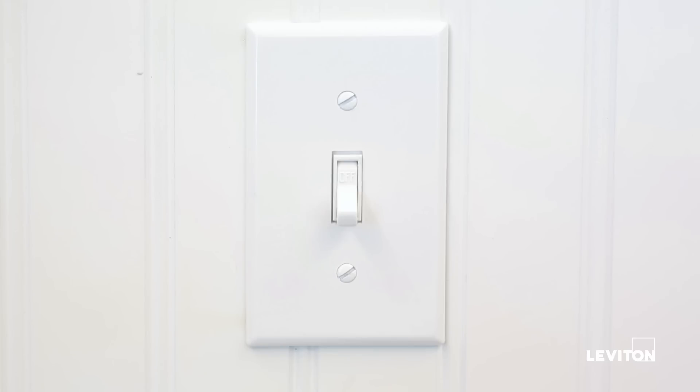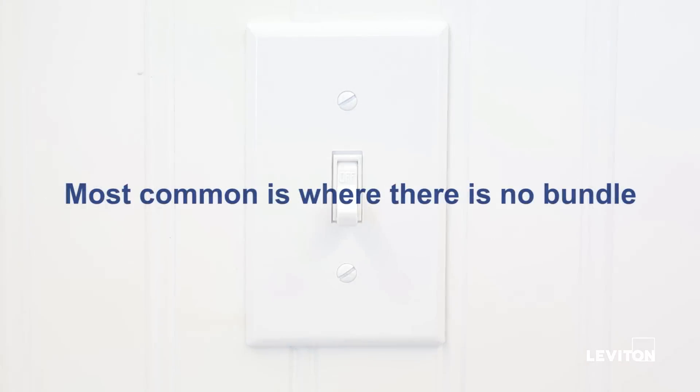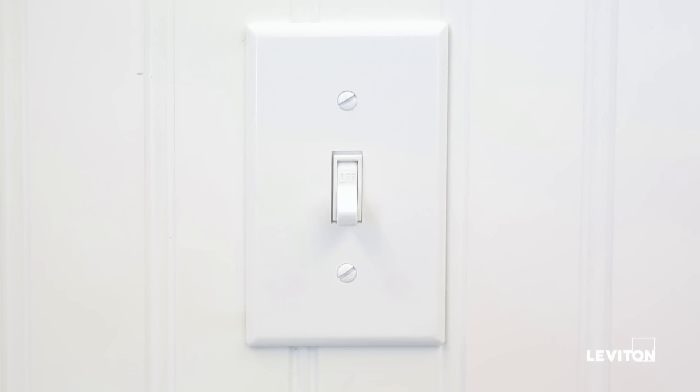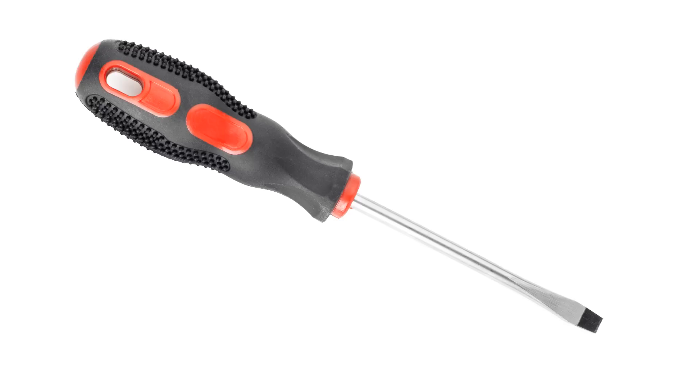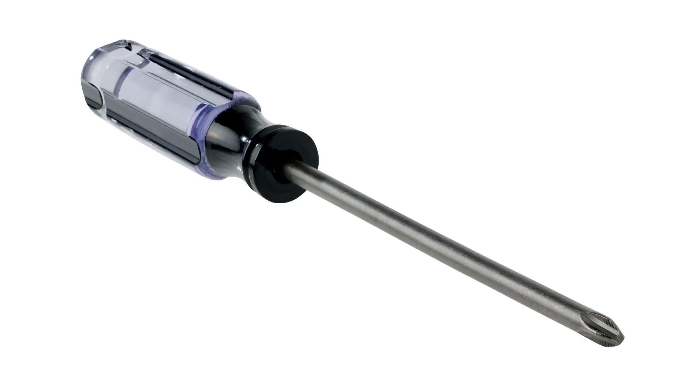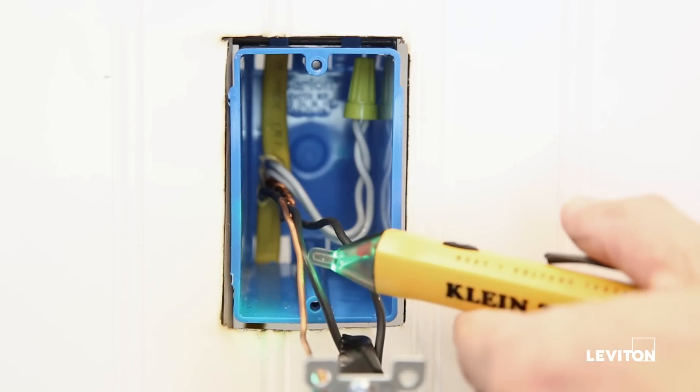We will now walk you through identification using a standard wall box and an existing light switch application. Please be certain to follow all wiring instructions and diagrams provided with the product. When identifying a neutral wire in your home, please have the following tools on hand: a flat head screwdriver, a Phillips head screwdriver, and a handheld voltage tester.